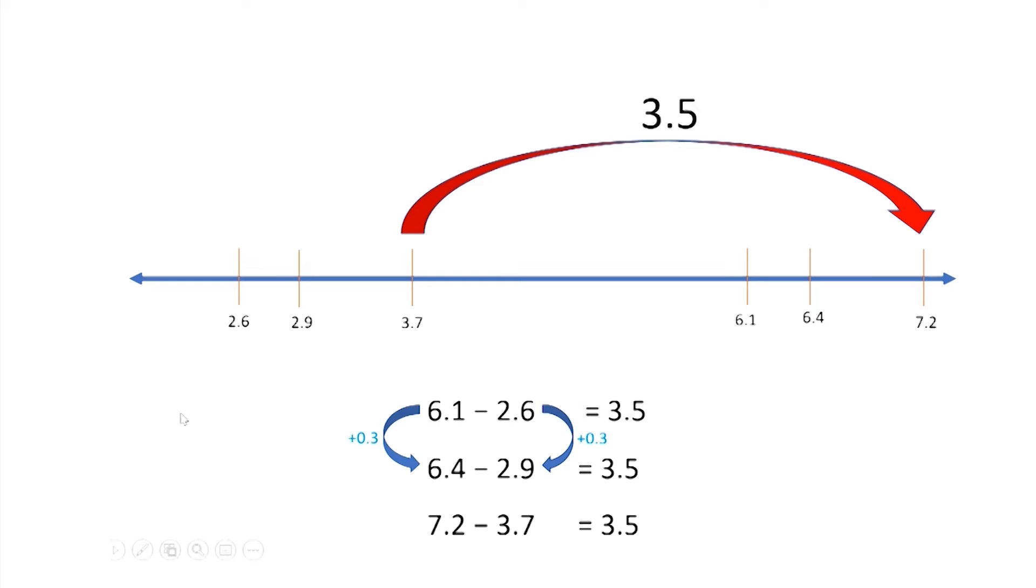Okay, how about between this one? 8 tenths between this one. 6 and 4 tenths plus 8 tenths is 7 and 2 tenths. And 2 and 9 tenths plus 8 tenths is 3 and 7 tenths. So, again, I added the same amount to both sides and my answer was still 3 and 5 tenths. This is called the constant difference strategy.